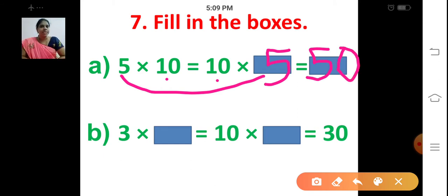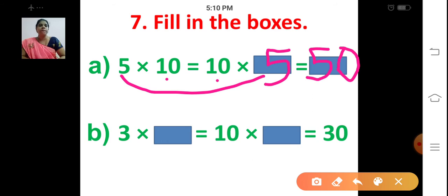Let me repeat: 5 into 10 is equal to 10 into ___. Change the order: 5 into 10 becomes 10 into 5. The product is the same. 10 fives are 50. Write down 50 here. Understood, children?